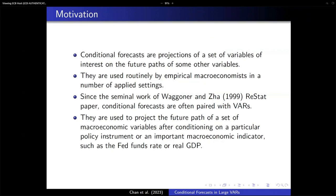Conditional forecasts is a projection of a set of variables of interest, conditioned on the future path of some other variables. Conditional forecasting is very popular within empirical macroeconomics, thanks to seminal work by Wagner and Zar — their 1999 Restat paper — where they introduced conditional forecasts within the VAR framework. The ECB also has a BEAR toolbox that implements conditional forecasts, so I presume some people in this audience have used them at one stage of their research career.